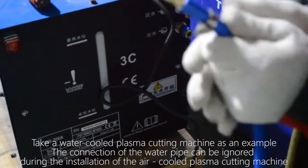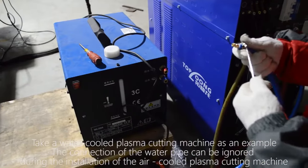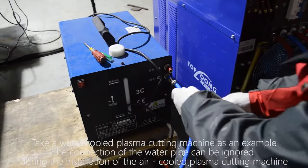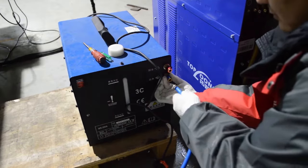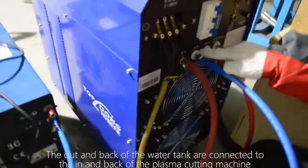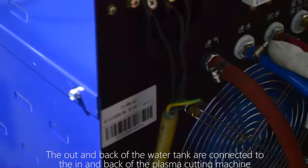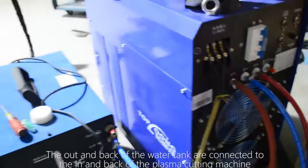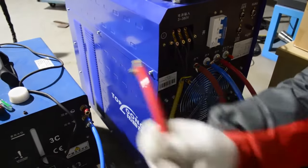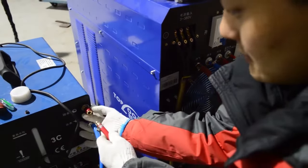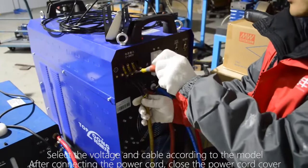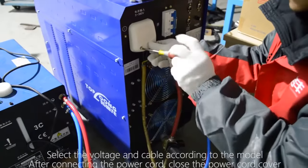Take a water cooled plasma cutting machine as an example. The connection of the water pipe can be ignored during the installation of the air cooled plasma cutting machine. The out and back of the water tank are connected to the in and back of the plasma cutting machine. Select the voltage and cable according to the model. After connecting the power cord, close the power cord cover.